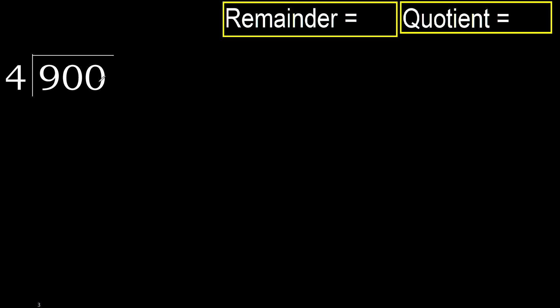900 divided by 4. 9 is not less, therefore work with 9. 4 multiplied by which number is nearest to 9, but not greater? 4 multiplied by 3 is 12 — 12 is greater.